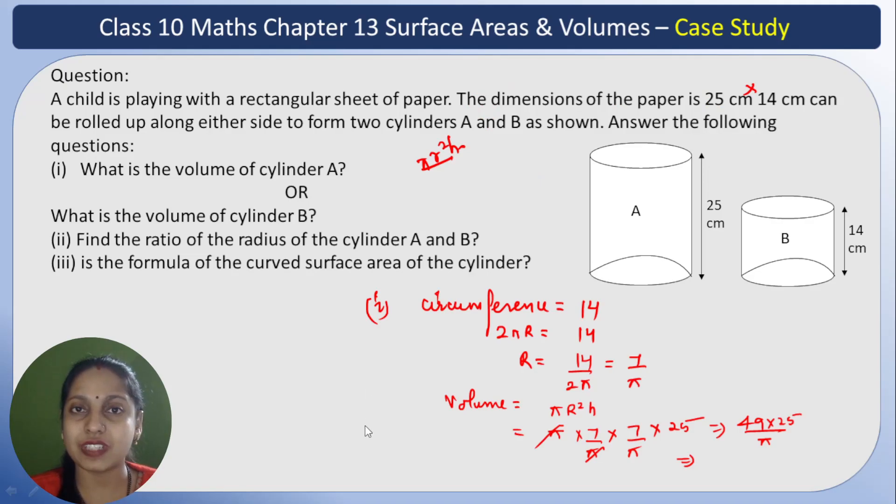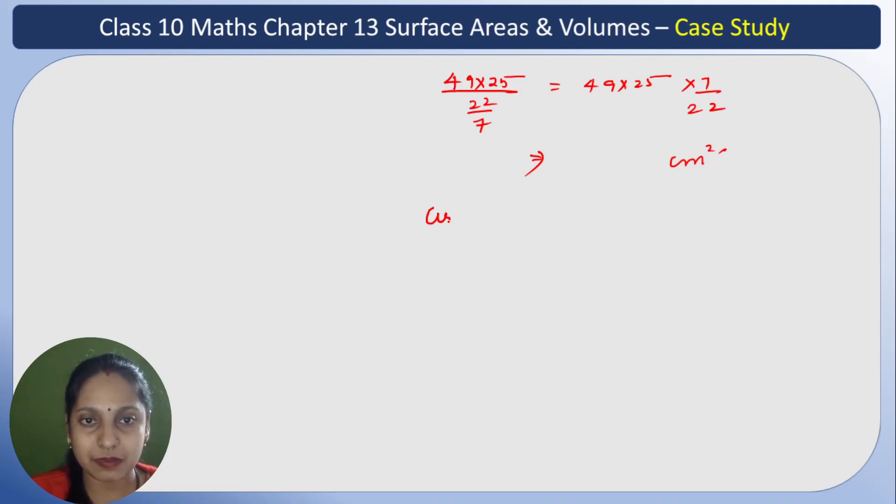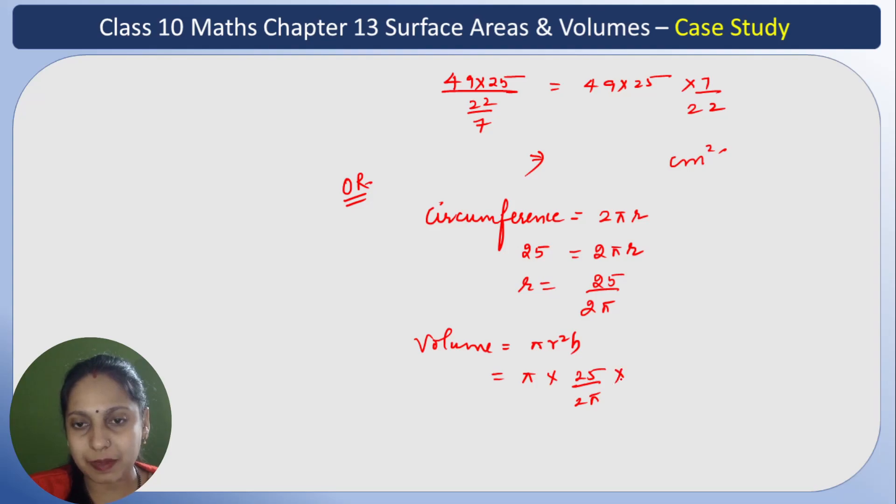Another question: what is the volume of cylinder B? For B, the height is 14, so the circumference is 25. Let's find it. Circumference = 2πR = 25, so R is 25 upon 2π. The volume formula is πR²H.